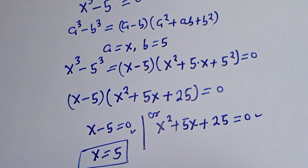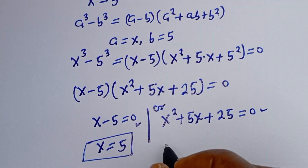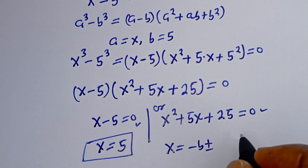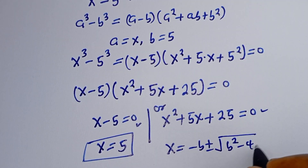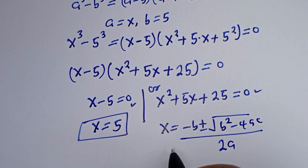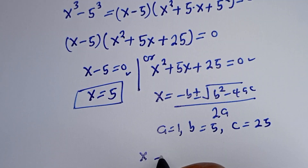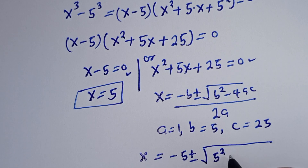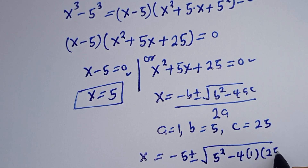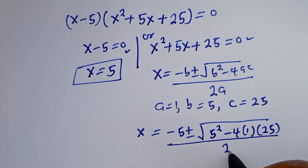From the second case, this is a quadratic equation which can be solved with the quadratic formula: S is equal to negative B plus or minus square root of B squared minus 4AC, divided by 2A. From the equation S squared plus 5S plus 25 equals 0, A is equal to 1, B is equal to 5, and C is equal to 25. Then S is equal to negative 5 plus or minus square root of 5 squared minus 4 multiplied by 1 multiplied by 25, divided by 2 multiplied by 1.